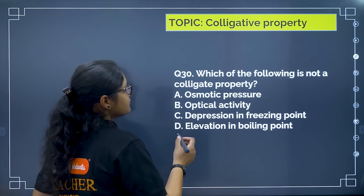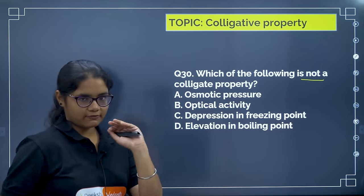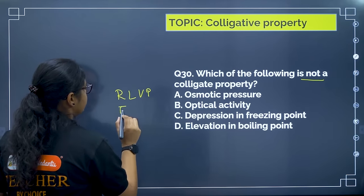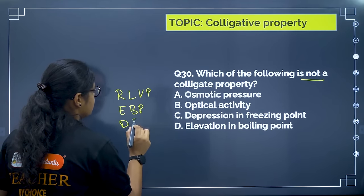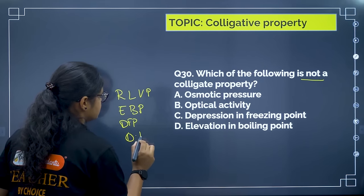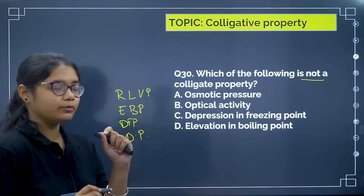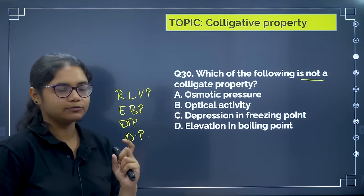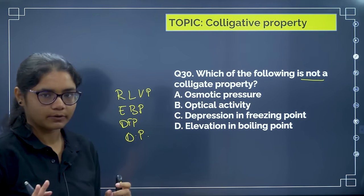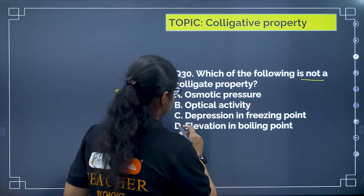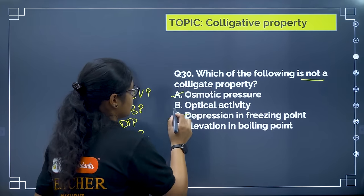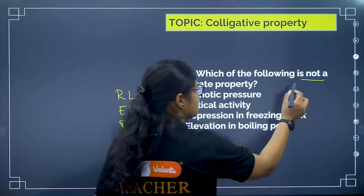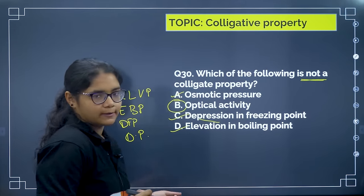Which of the following is NOT a colligative property? The four colligative properties are: relative lowering of vapor pressure, elevation in boiling point, depression in freezing point, and osmotic pressure. Note: only elevation in boiling point is colligative — boiling point alone is not. Correct answer is option B. Very important: distinguish between elevation in boiling point (colligative) and boiling point itself (not colligative).